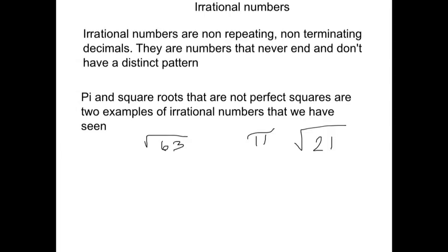So 0.3 repeating is a decimal that never ends. However, it has a pattern to it—it's a 3 that repeats.